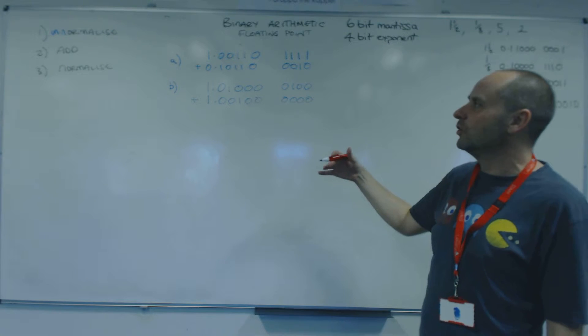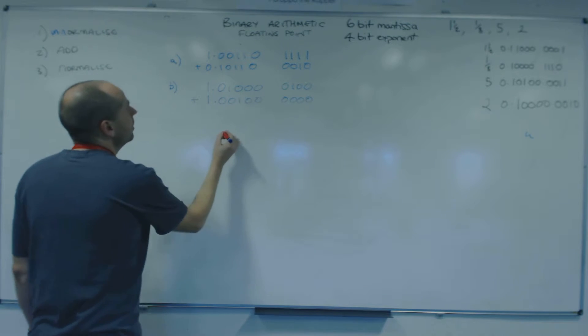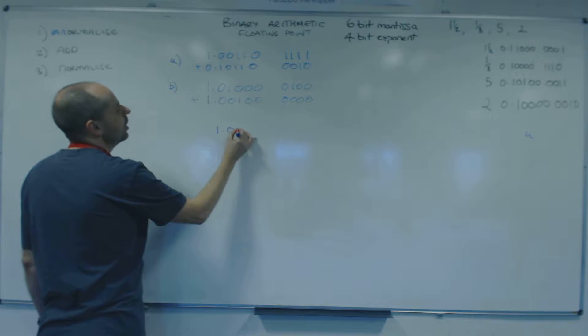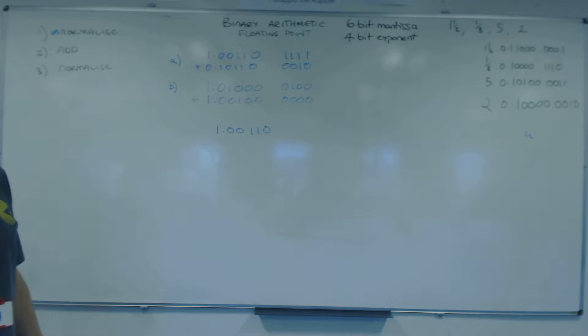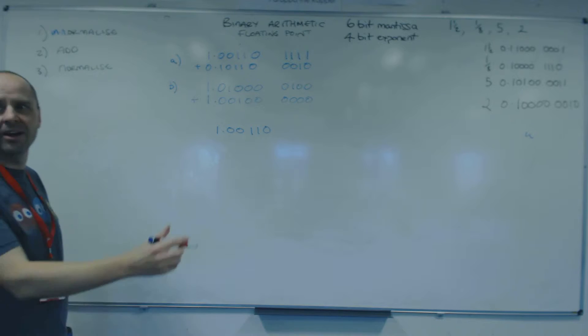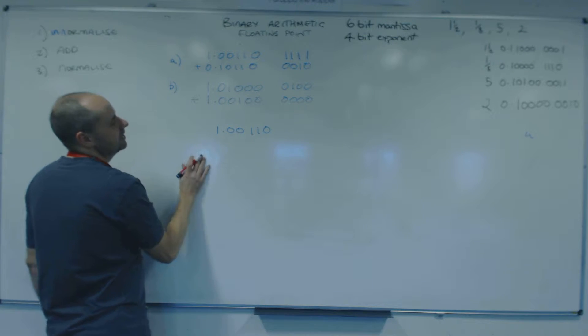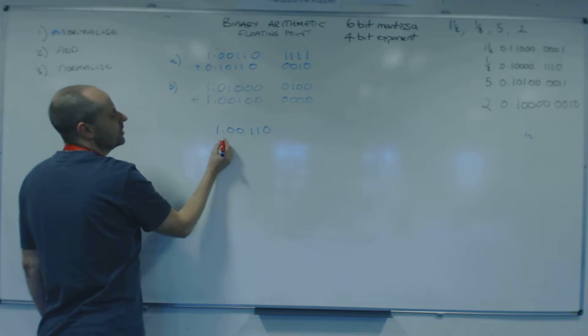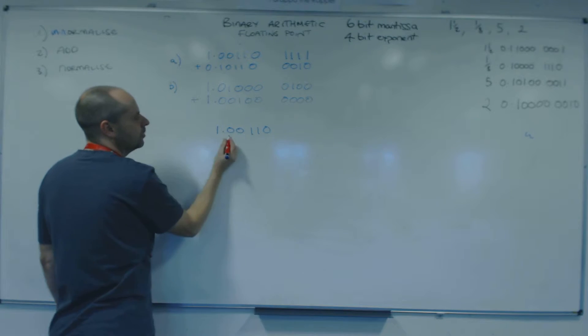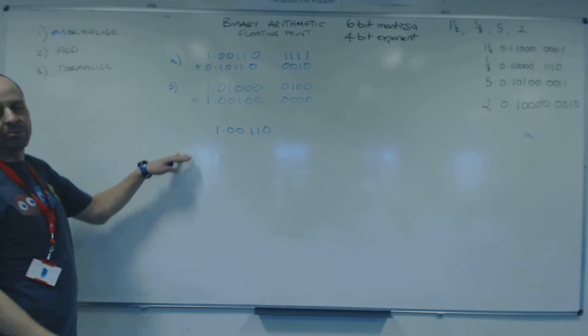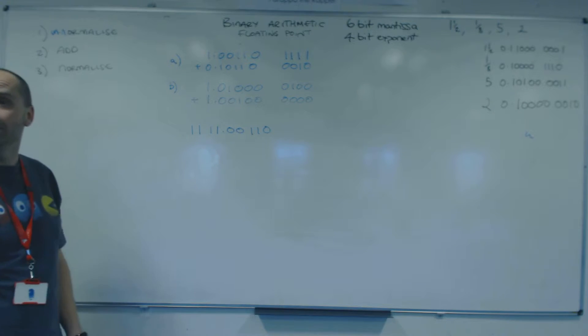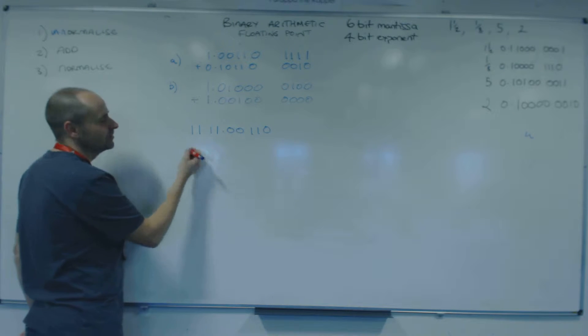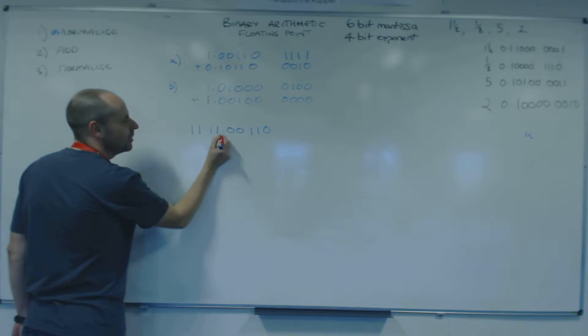We've got these first two numbers, so we're going to un-normalise first. So we've got 1.00110 and the exponent is minus one. We know that because it's all ones. So we need to move the binary point. We're going to go this way. But we've only got one bit, so let's sign extend. So we just copy the sign bit.